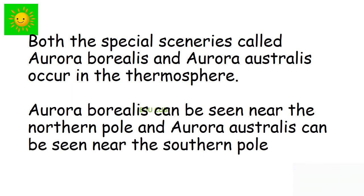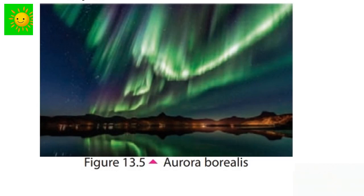Now you can see here both the special scenarios in this area. Both special sceneries called Aurora Borealis and Aurora Australis occur in the thermosphere. Aurora Borealis can be seen in the northern pole and Aurora Australis can be seen in the southern pole. Now you can see Aurora Borealis here.